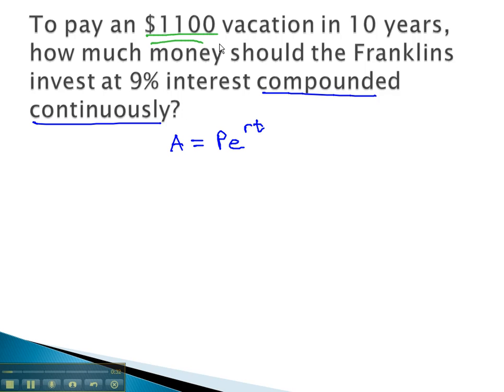We want to pay for an $1,100 vacation, so this is the final amount we want in the account. It's gonna be 10 years before we take this vacation. This is our time. The 9% is the rate, which needs to be written as a decimal, .09.